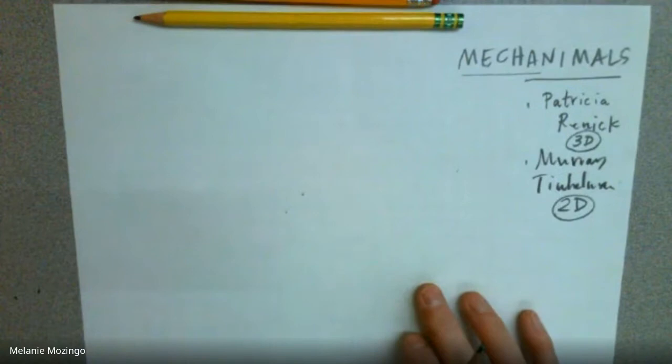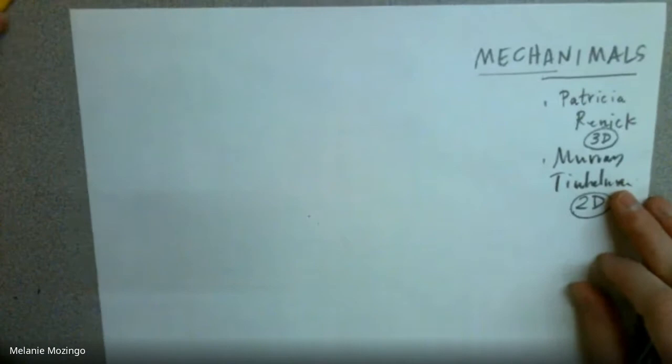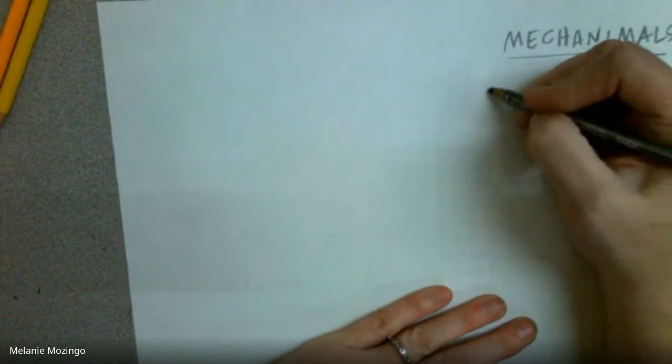Now, we're going to start with a drawing, and then we'll eventually transition this to clay. You heard it, clay. So think about, you can start by brainstorming what are some animals that you potentially like.